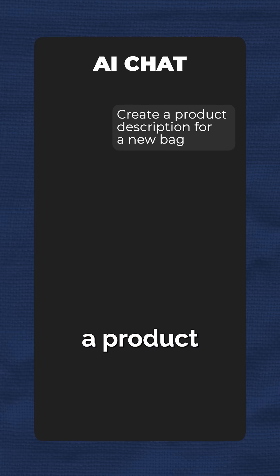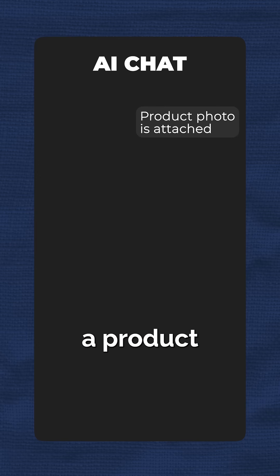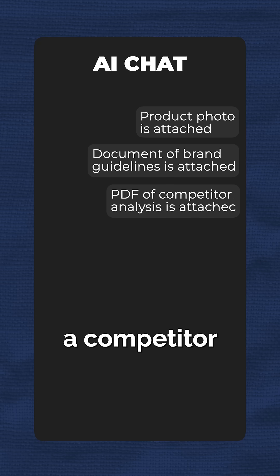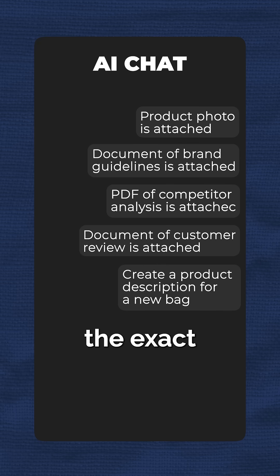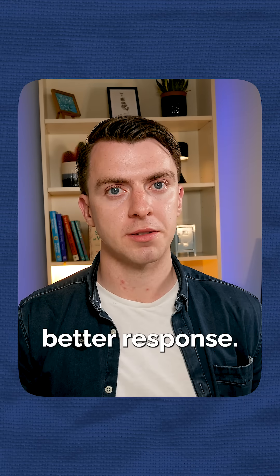Rather than saying create a product description for a new bag, with context engineering you might want to upload a product photo, upload your brand guidelines, upload a competitor analysis, upload customer reviews, and then do the exact same prompt. It's the same prompt, but you'll get a much better response.